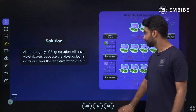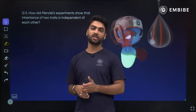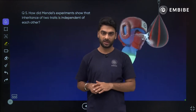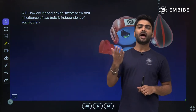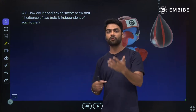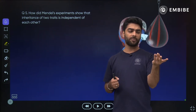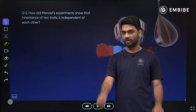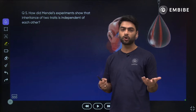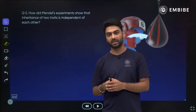How did Mendel show that inheritance of two traits is independent of each other? Here we talk about the dihybrid cross. In grade 10 only four contrasting character pairs are covered, but Mendel actually studied seven pairs total. You should always go beyond the textbook - that is where true knowledge lies.